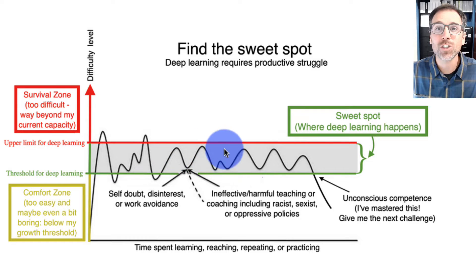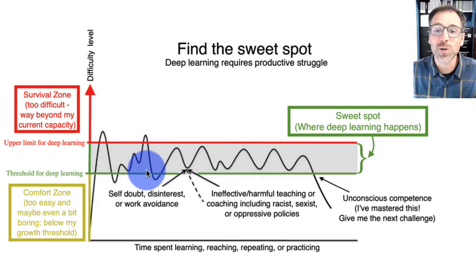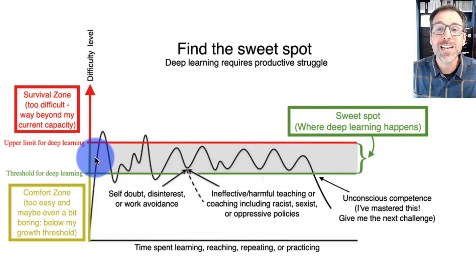Remember that one of the best things we can do in learning is find activities that are just beyond our comfort zone and push us into the sweet spot, the location where deep learning happens. So in this diagram, we have kind of three different forms of practice. We have comfort zone practice, which is too easy and even a little boring. We have sweet spot practice. This is where deep learning happens. It's hard enough to be interesting, but easy enough to be doable. And then we have survival zone training, which is way beyond our current capacity.